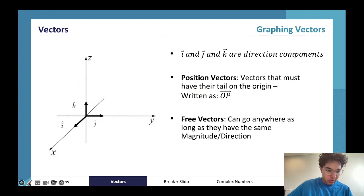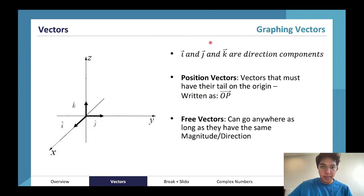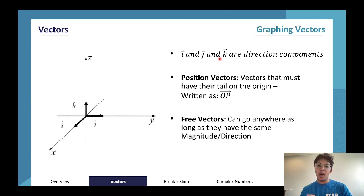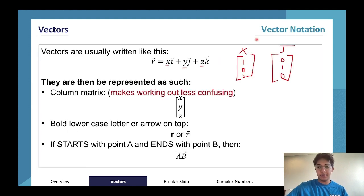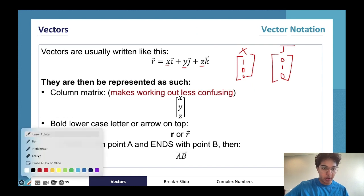i, j, and k are direction components: i tells us things in the x axis, j tells us things in the y axis, and k tells us things in the z axis.